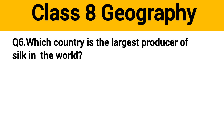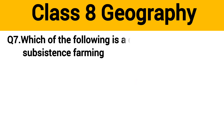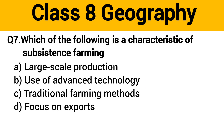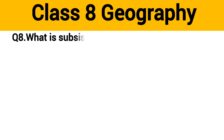Question number 5: What is sericulture? The right answer is option B: the cultivation of silkworms. Question number 6: Which country is the largest producer of silk in the world? The right answer is option B: China.